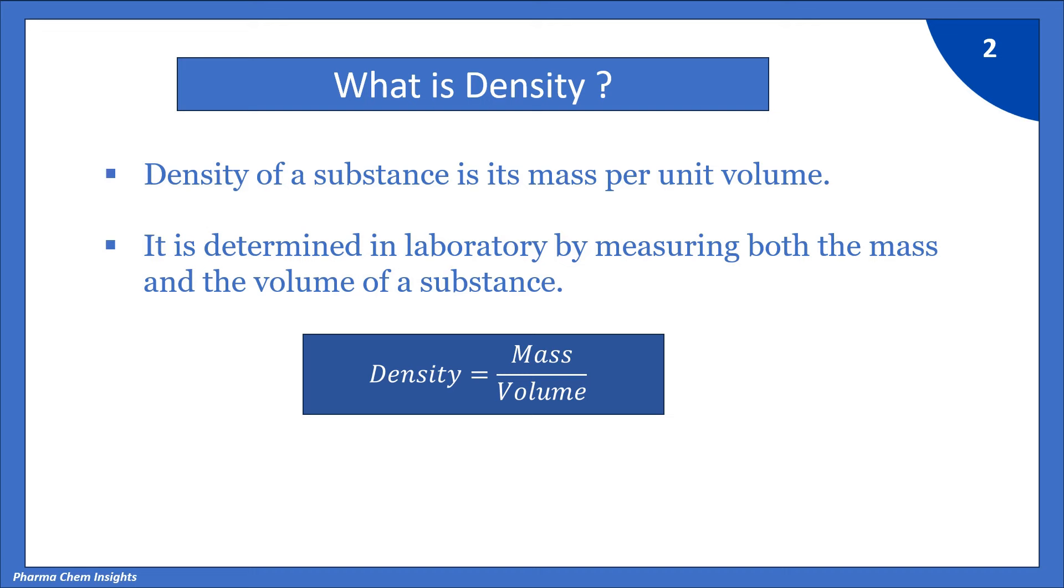So, here is the formula for density. Density is equal to mass divided by volume. SI unit of density is kilogram per meter cube and CGS unit of density is gram per ml.